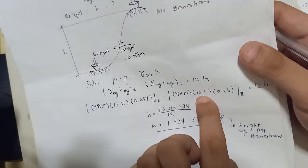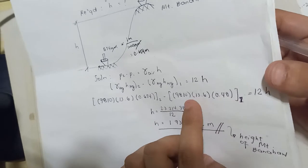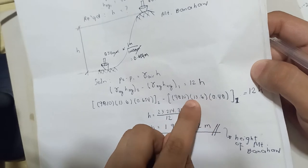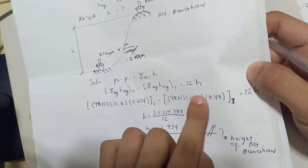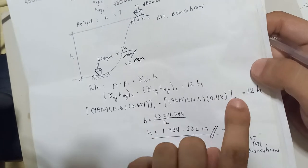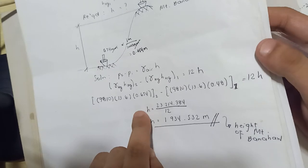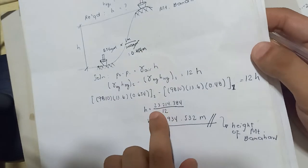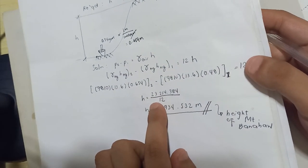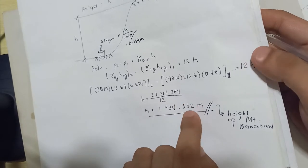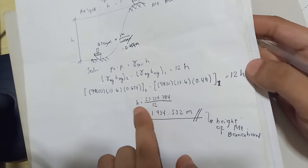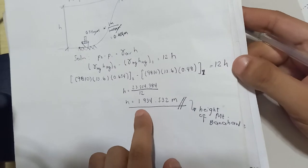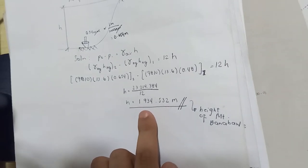So we have 9,810 times 13.6 times 0.654 minus 9,810 times 13.6 times 0.48 plus 12H. Cross-multiplying and dividing gives 80,214.384 over 12. Calculating using the scientific calculator, the height of Mount Banahaw is 1,034.532 meters.